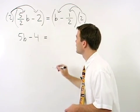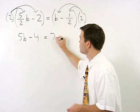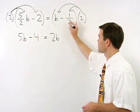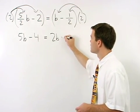On the right, 2 times b is 2b, and 2 times negative 1 half is negative 1.